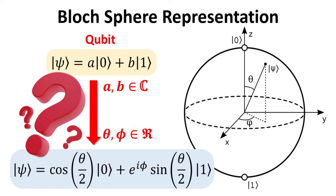In quantum mechanics, a qubit is a two-level quantum system. These two quantum states could be spin up and spin down, herein denoted by the |0⟩ and |1⟩ kets. The quantum mechanical state can be in a superposition of 0 and 1.